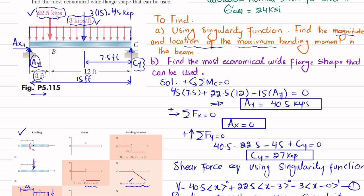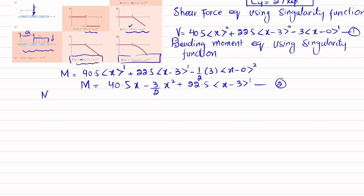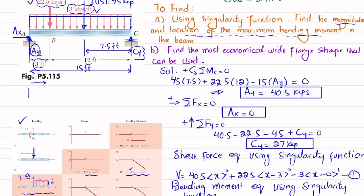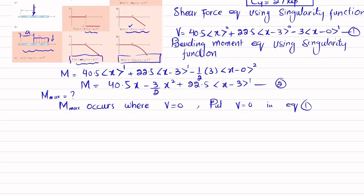In part (a), we need to find the magnitude and location of maximum bending moment. Maximum bending moment occurs where shear force equals zero. We set V = 0 in Equation 1. The point where shear force is zero, called xd, lies between 3 feet and 15 feet.